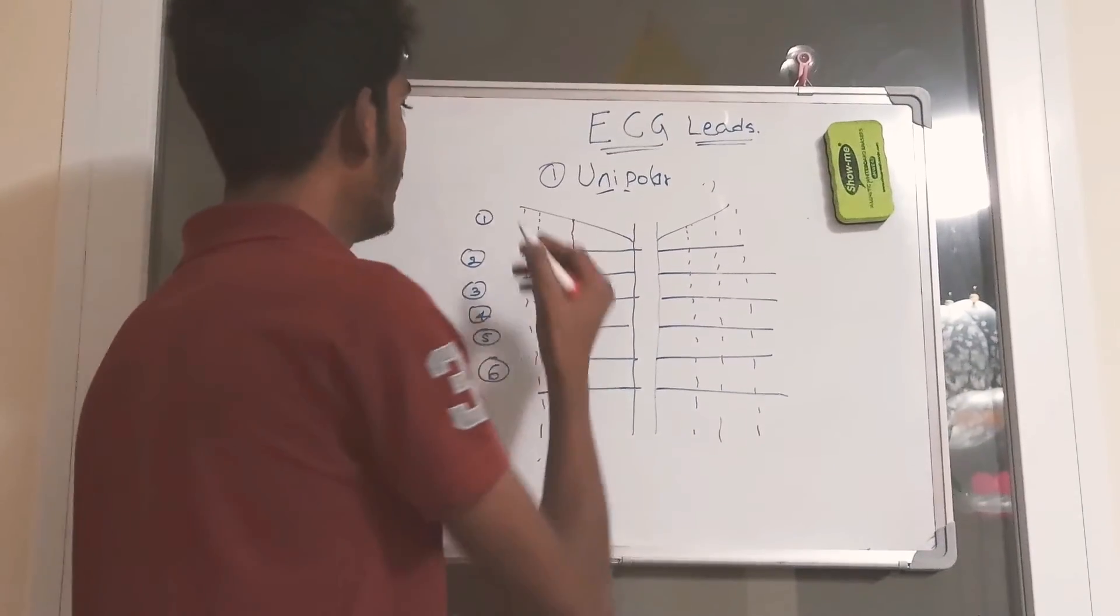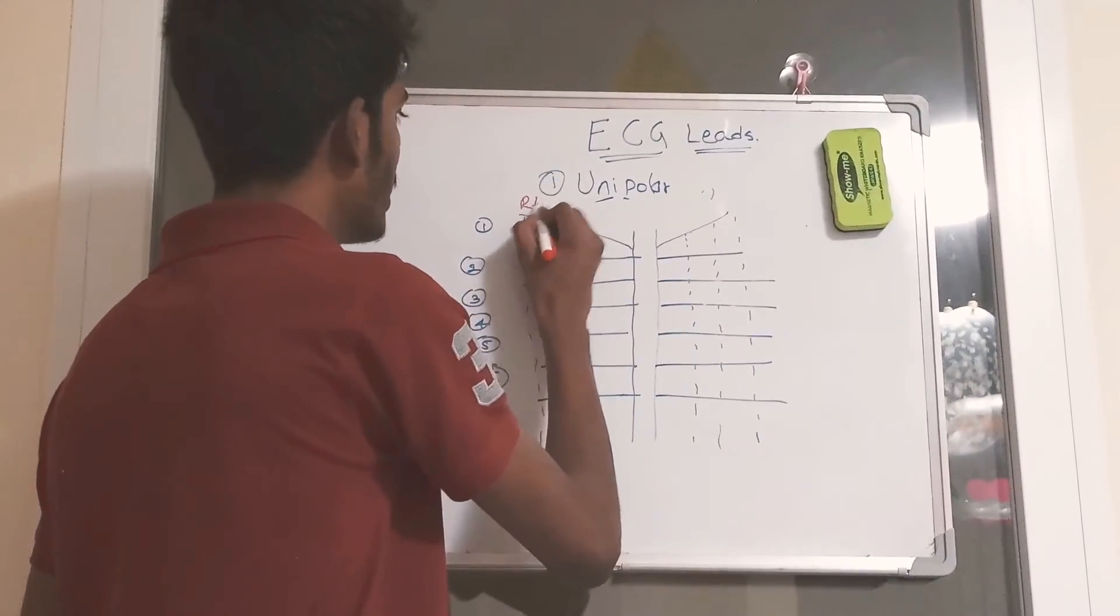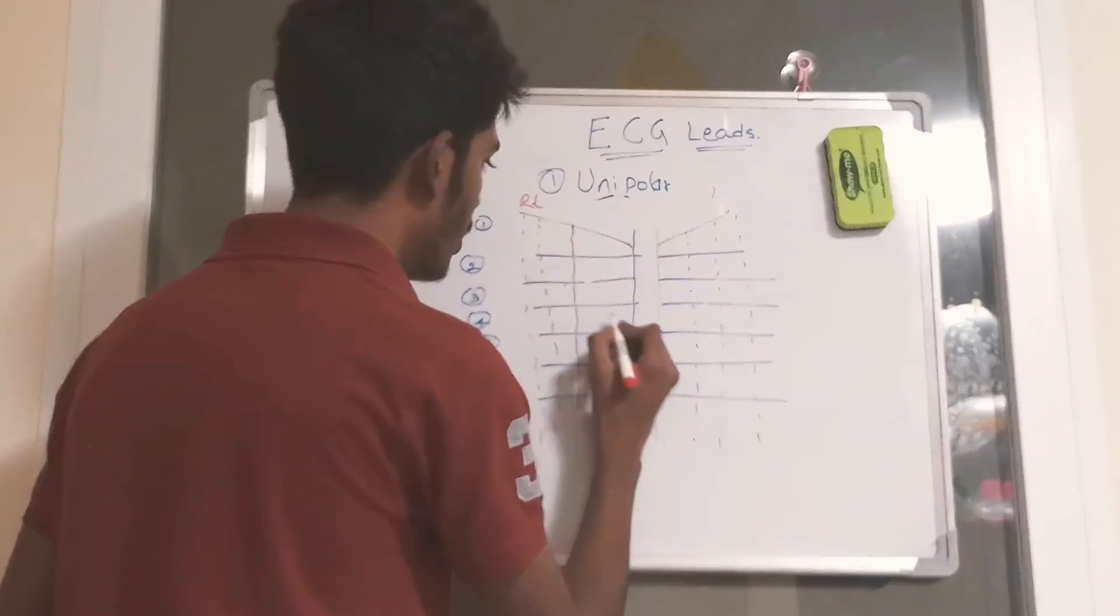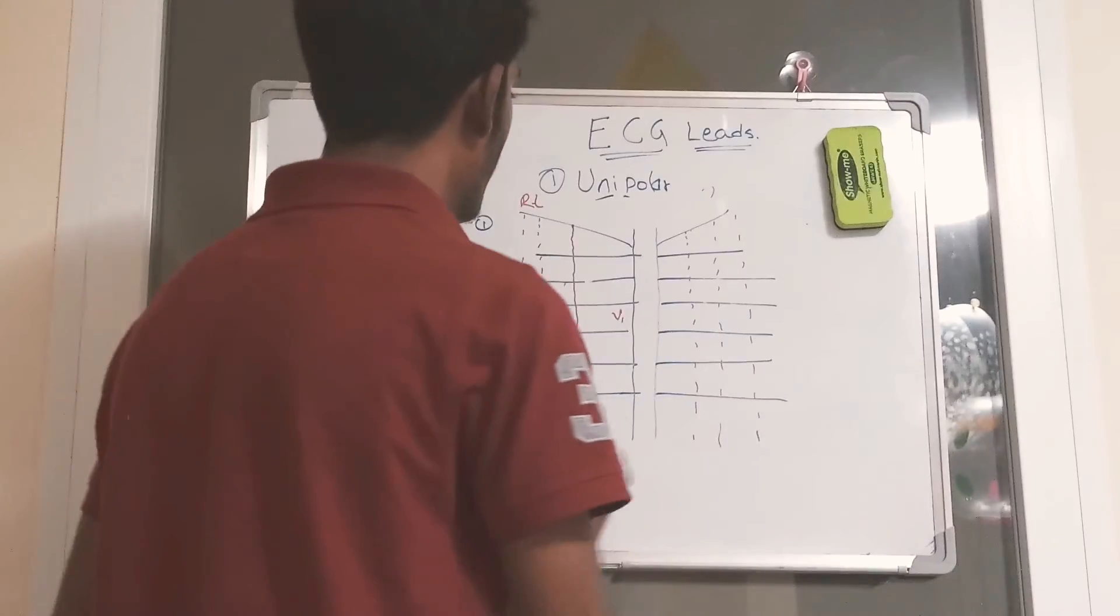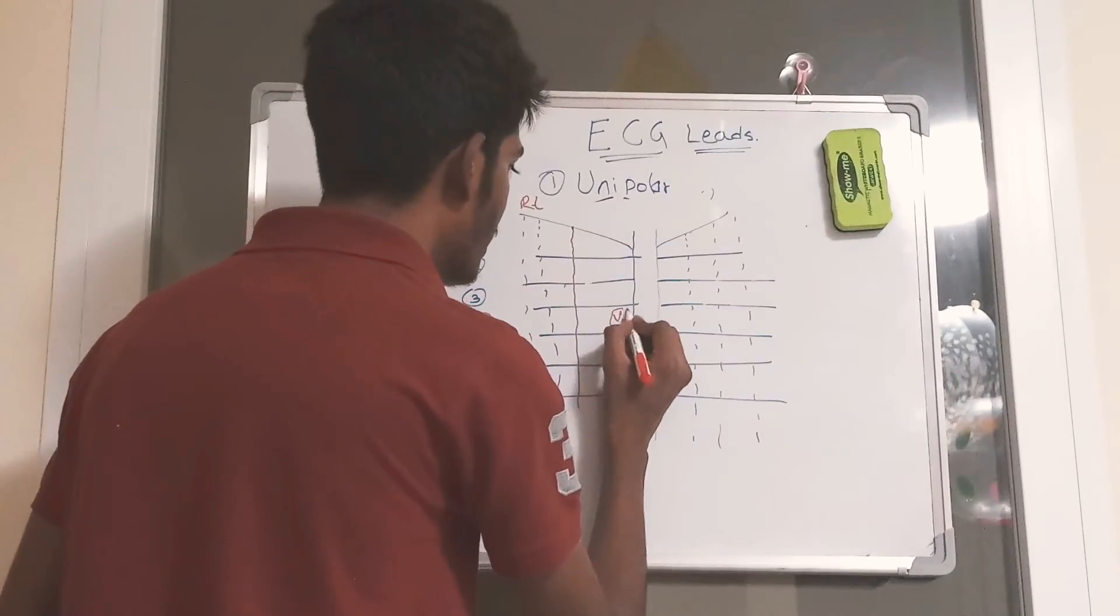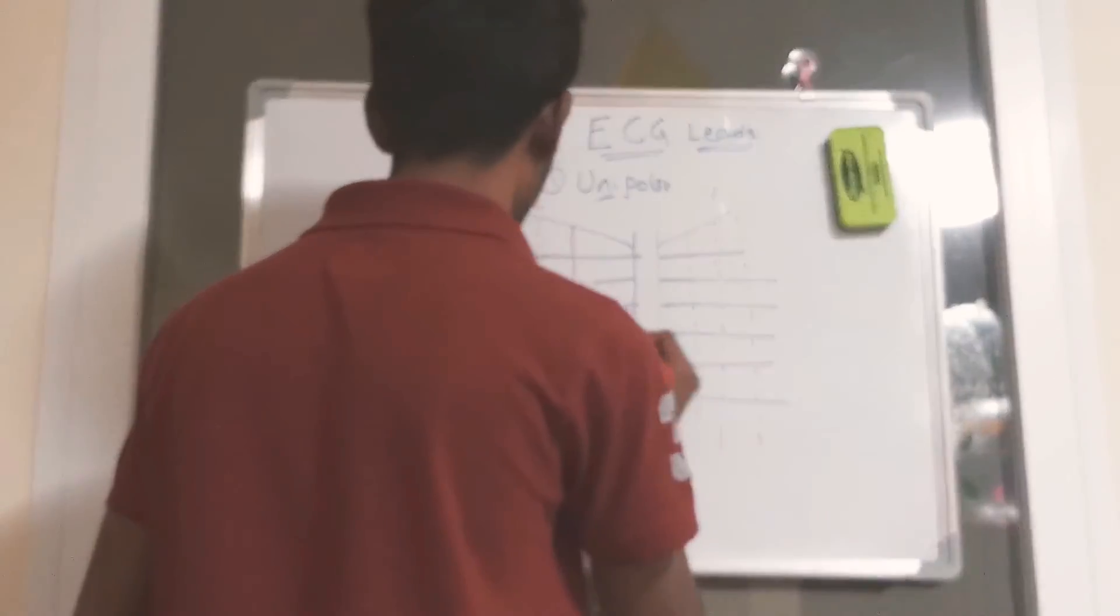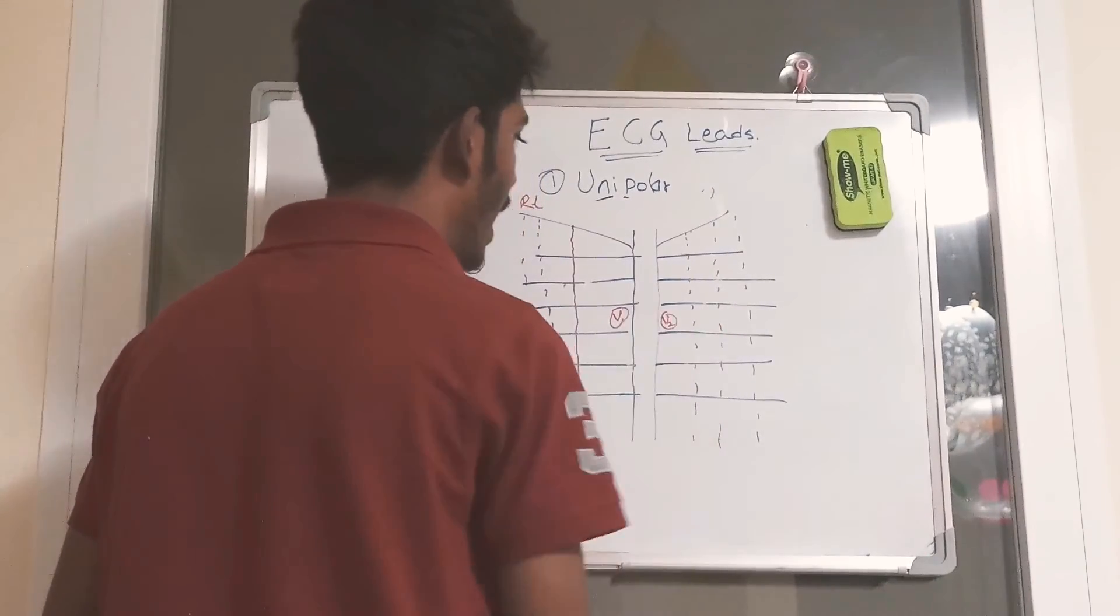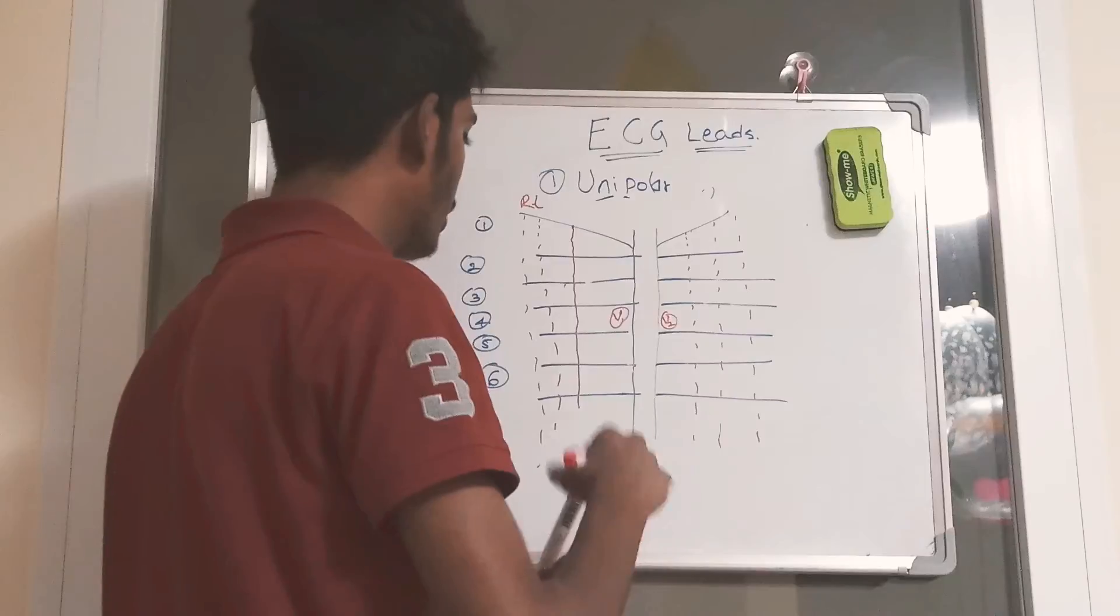V1 is connected on the right side, at the margin of the sternum, and the fourth intercostal space. This is V1, exactly opposite in the fourth intercostal space on the left side, V2 is placed. Let's skip V3, let's go to V4.